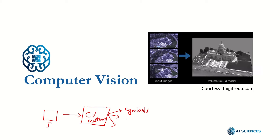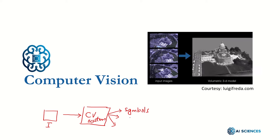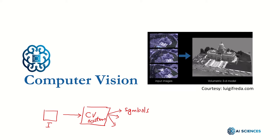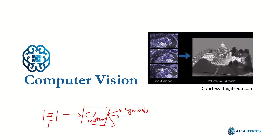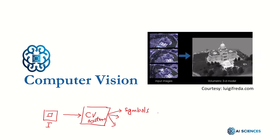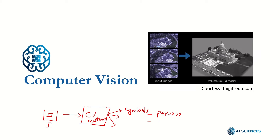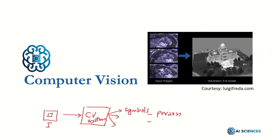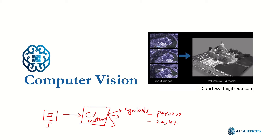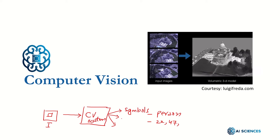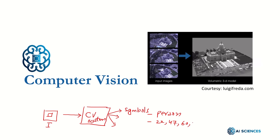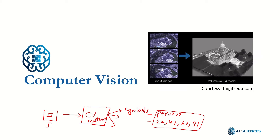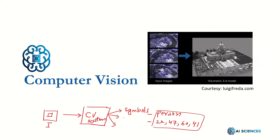In the case of object recognition or object detection, there exists an object and the output of the system might be the class category — let's say 'person' — and another output is the bounding box: the x coordinate, y coordinate, and width and height of the person, for example 22, 47, maybe width and height 60 and 41. So computer vision systems normally input an image and output certain decisions.